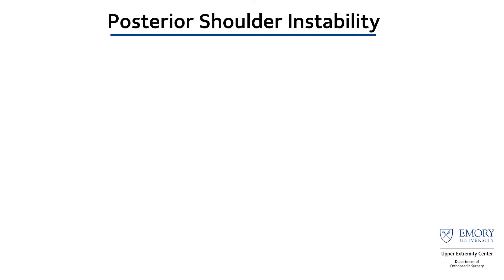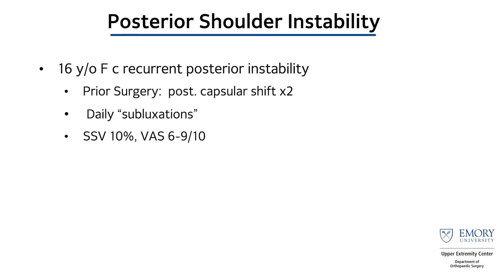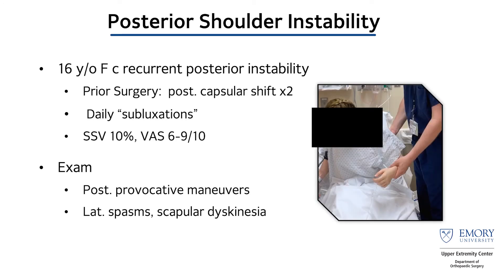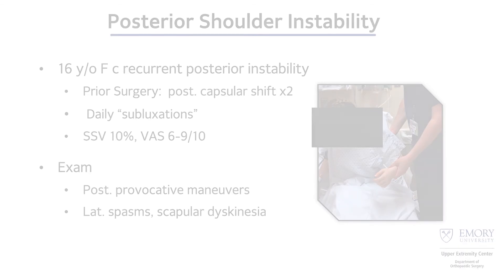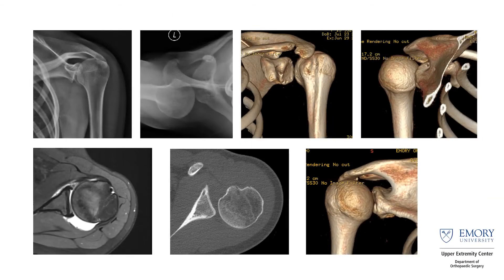Here's another example — a patient with recurrent posterior shoulder instability, daily subluxations, very limited function, and multiple prior surgeries. She had some latissimus spasms and scapular dyskinesia. You can see she subluxes posteriorly and has glenoid retroversion — essentially a pretty complex patient who was sent to me for a posterior wedge osteotomy, and she was only 16 years old.